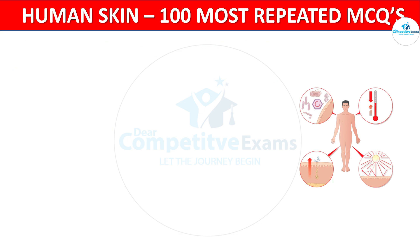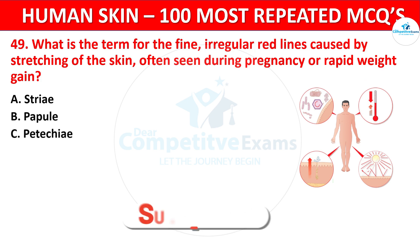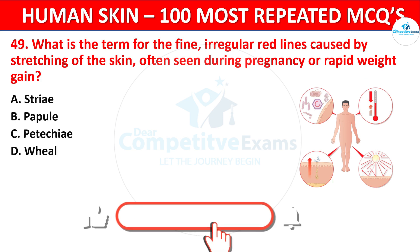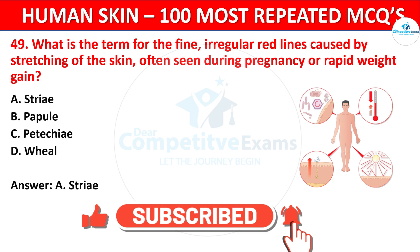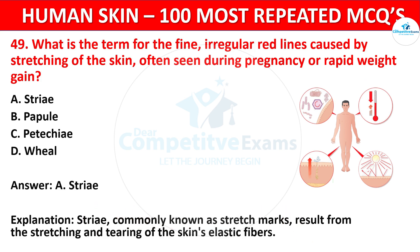Question 49. What is the term for the fine, irregular red lines caused by stretching of the skin, often seen during pregnancy or rapid weight gain? Your options: Striae, Papule, or Petechia. The correct answer is Striae. Striae, commonly known as stretch marks, result from the stretching and tearing of the skin's elastic fibers.